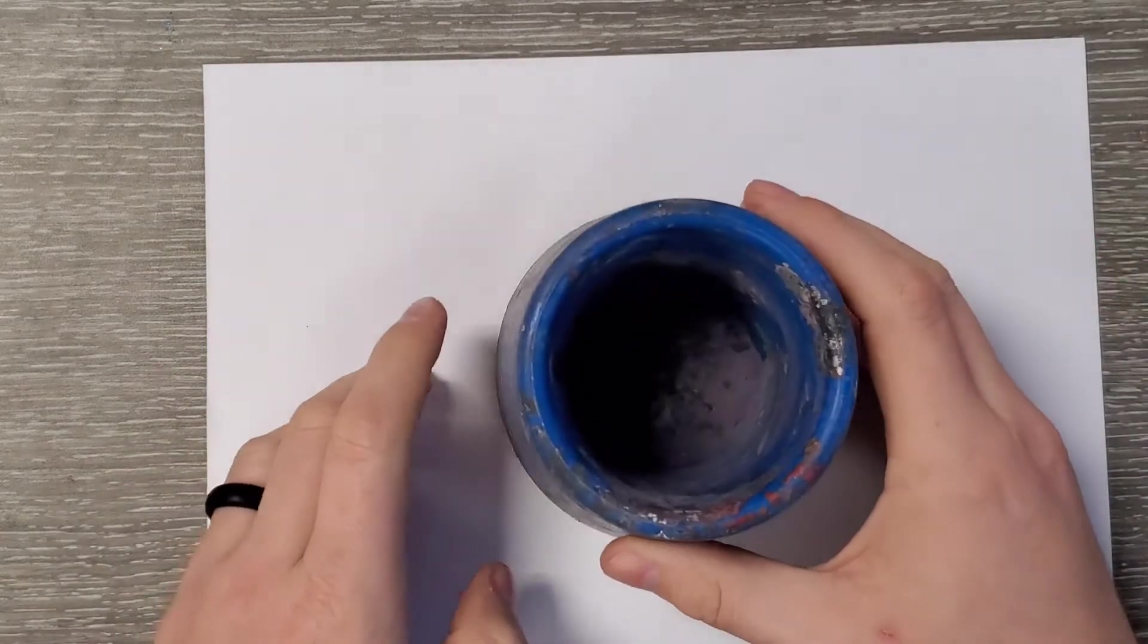Good morning, everyone. This demo is going to show you how to make a shaded sphere. Okay, so we're going to try to take a flat sheet of paper and create the illusion of depth and the illusion of three dimensions by creating a sphere.